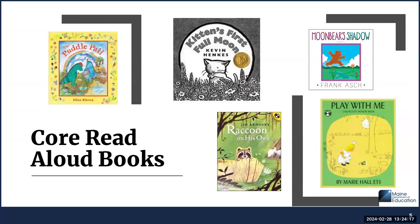Our last story in this unit is Puddle Pail. In Puddle Pail, two crocodile brothers go to the beach with pails. Each brother has different things they like and different ideas about what to do with their pails. You will have discussions about puddles and reflections in puddles, feelings, shapes, nature, shadows, and about collections — including ideas of what students may want to collect or may already collect.